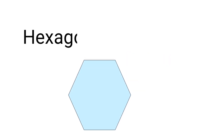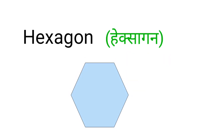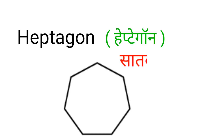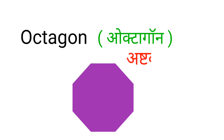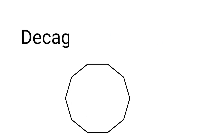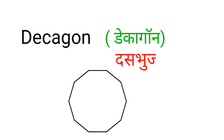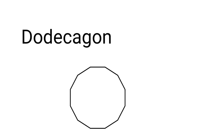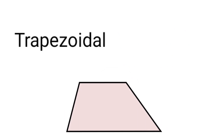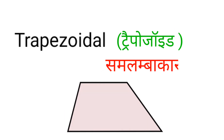Hexagon — Hexagon means Shat Bhuj. Heptagon — Heptagon means Sath Kodak. Octagon — Octagon means Ast Kona. Rectangle — Rectangle means Ayat. Decagon — Decagon means Das Bhuj. Dodecagon — Dodecagon means Bara Bhuj. Trapezoid — Trapezoid means Samlambakar. Ellipse — Ellipse means Vritakar. Semi-circle — Semi-circle means Adrachakra.